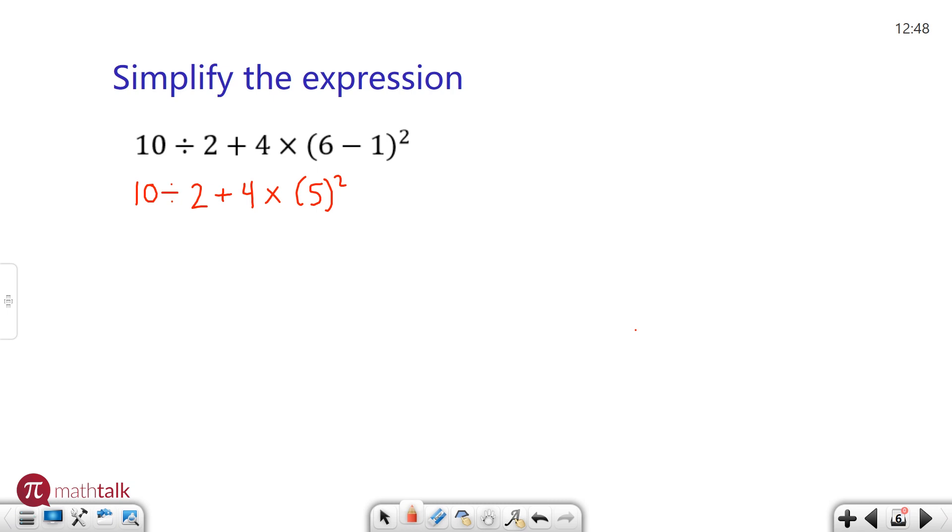The next operation after parentheses is the letter E which represents exponents. I do have an exponent so that's the next thing I need to do. So I'm going to copy the rest, 4 times 5 squared is 5 times 5 which is 25.